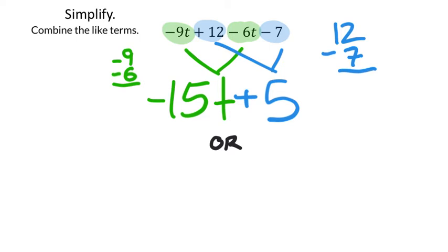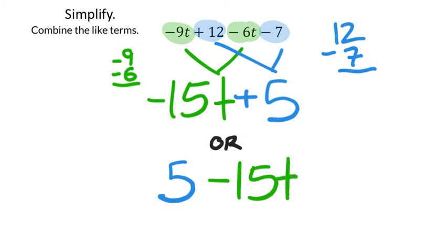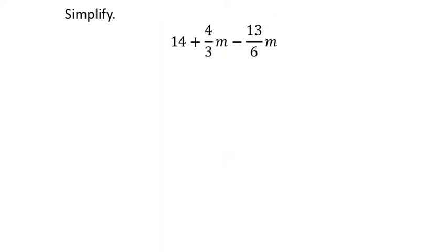There's a different way to write this but it means exactly the same thing — you could put the 5 in front: 5 minus 15t. It's like writing a fraction in different ways without changing the value. There were four terms but only two different types, which is why the answer has only two different terms.